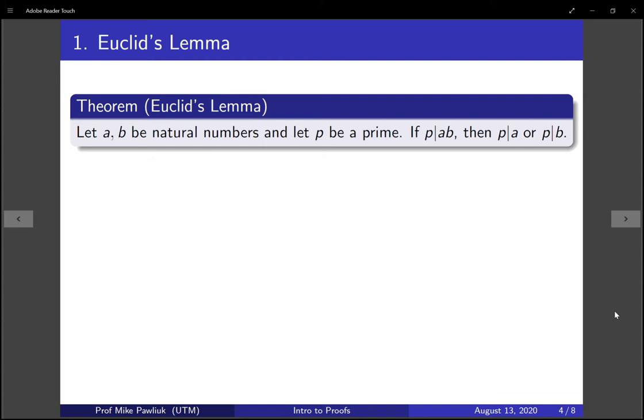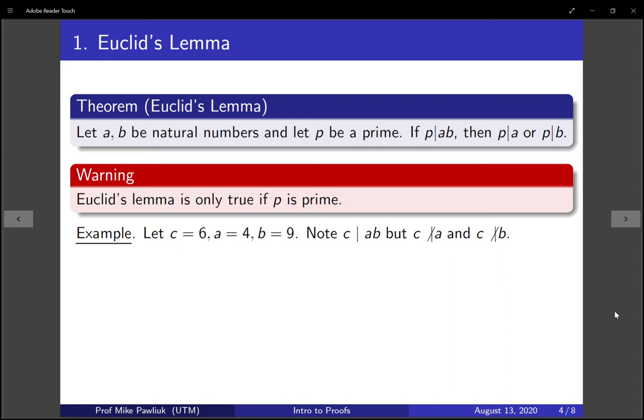We'll start with Euclid's Lemma, which is actually a theorem, but we call it a lemma. Let a and b be natural numbers, and let p be a prime. If p divides the product of a and b, then it divides a, or it divides b, or possibly both.